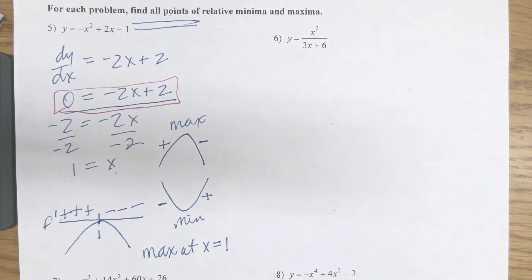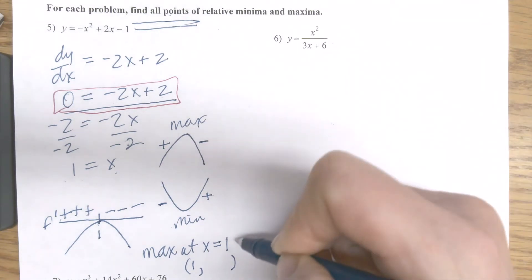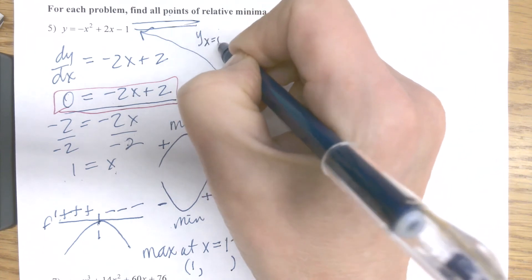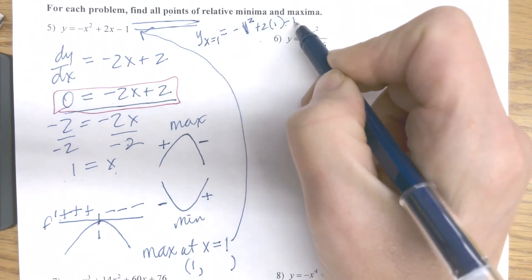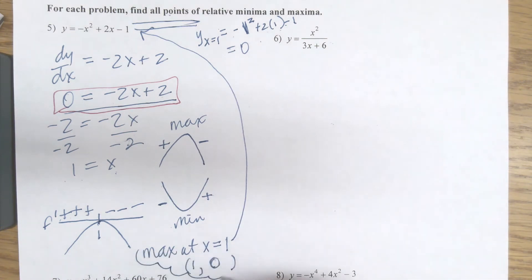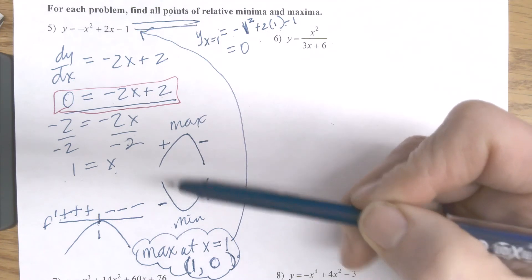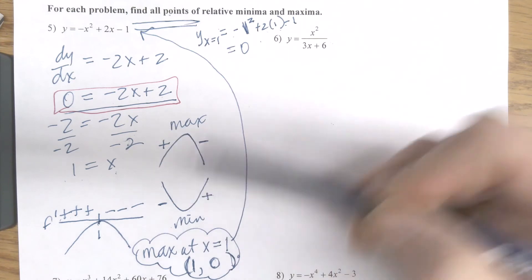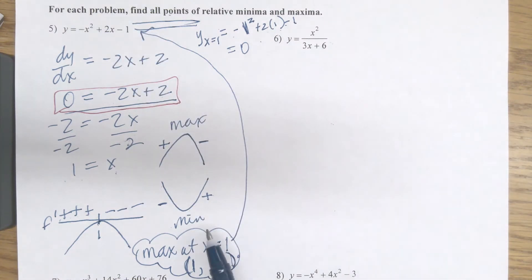Because it asks me to find all points, I need to find the y value that goes with that, so the point is 1 comma what? That goes back up to the original. I want to find y when x is 1, so I plug in: negative 1 squared plus 2 times 1 minus 1, which is negative 1 plus 2 minus 1, and that looks like it's 0. So my y value is 0. That means there is a max on this graph at the point (1, 0).